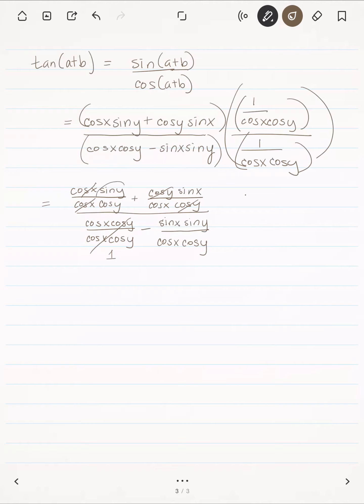Well, on top here, we have the sine of y over the cosine of y, which we can rewrite as the tangent of y plus the sine of x over the cosine of x. That's the tangent of x over 1.